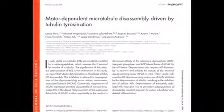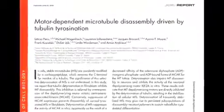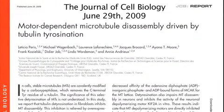By showing that the absence of tyrosine reduces the activity of depolymerizing motors, the researchers have answered the conundrum of why de-tyrosinated microtubules are stable. They now want to solve another long-term mystery by identifying the tubulin carboxypeptidase responsible for removing tyrosine in the first place. Their current paper can be found in the June 29th edition of the Journal of Cell Biology.